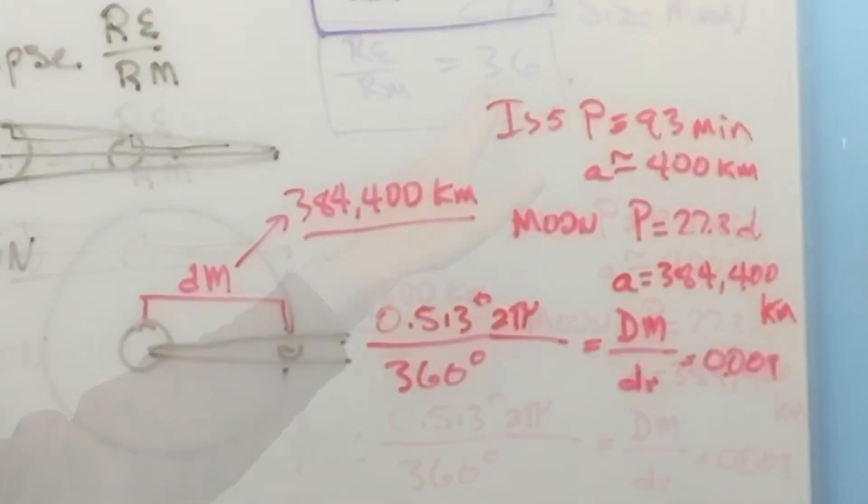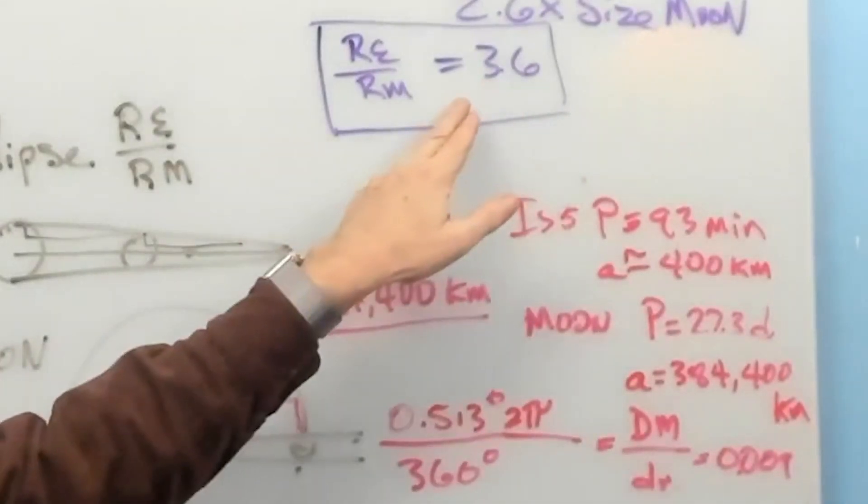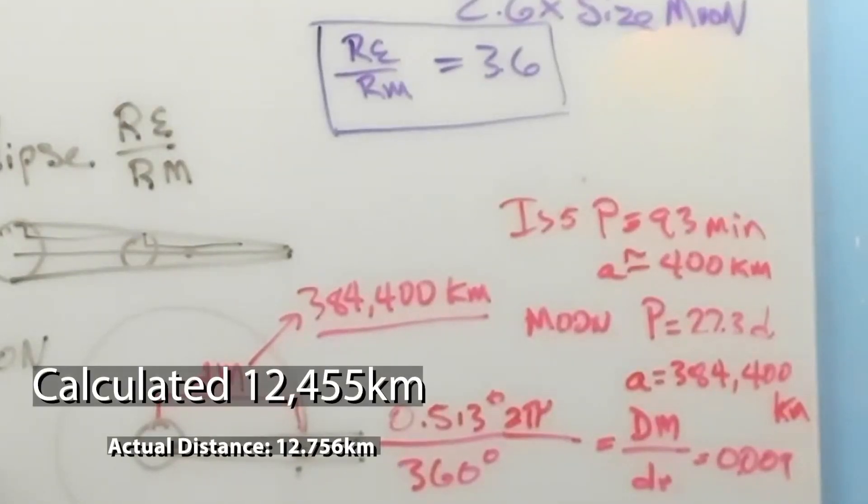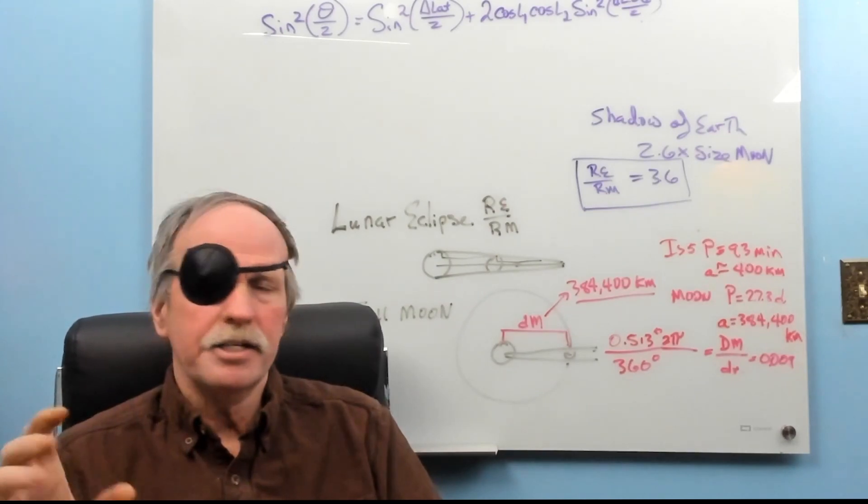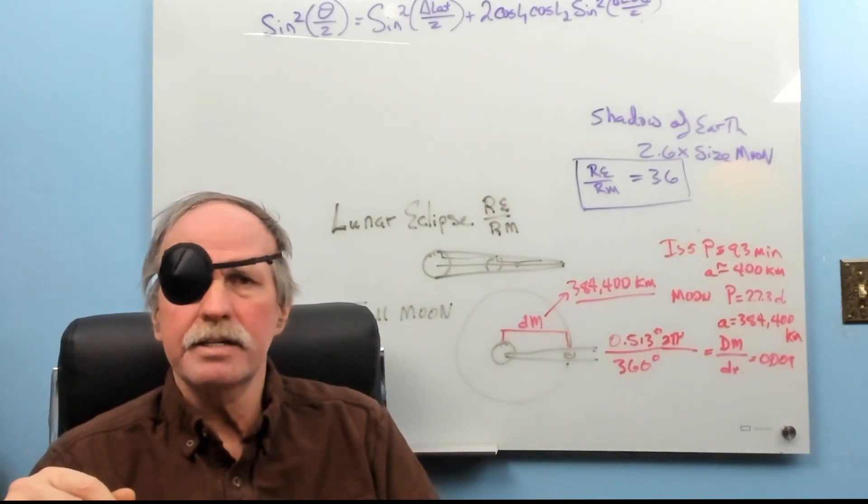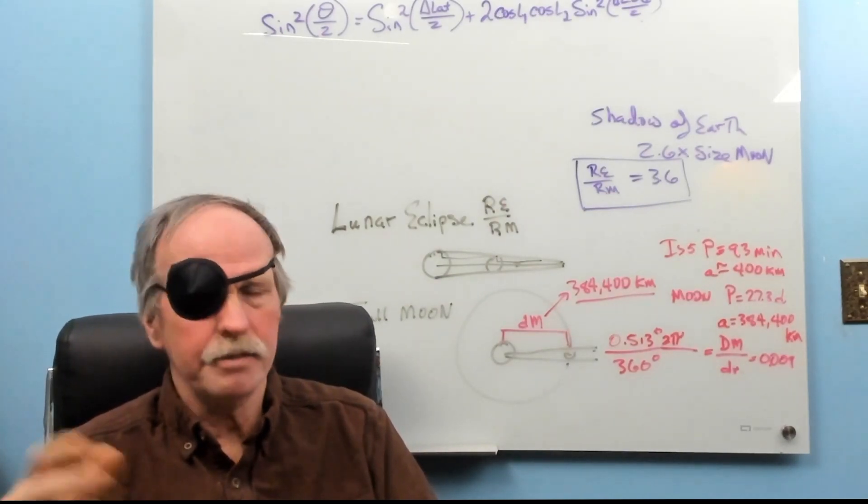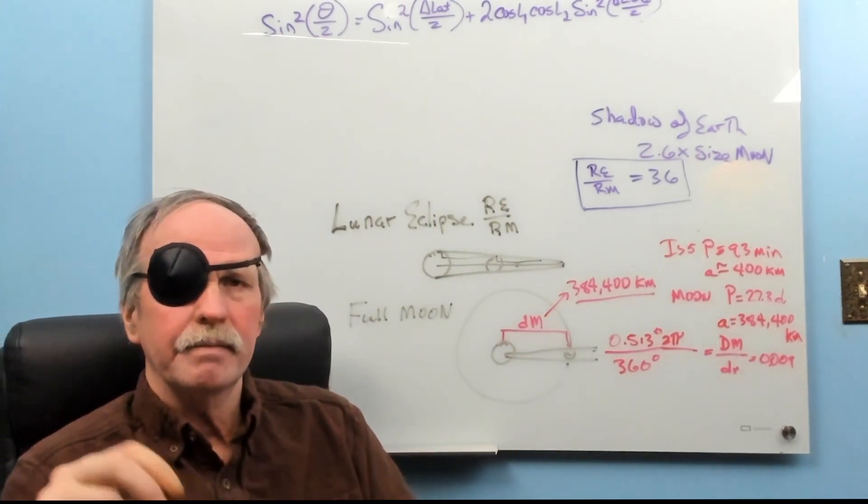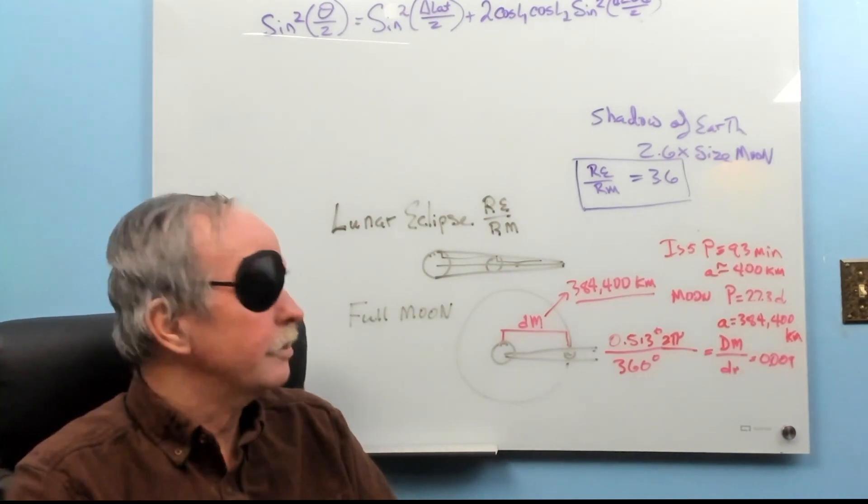The current accepted value for the diameter of the Moon based on more sophisticated measurements is 3474 kilometers. We're only 14 kilometers off. Now, recall that the diameter of the Earth is 3.6 times the diameter of the Moon. So, let's multiply this by 3.6. We come up with 12,455 kilometers. The currently accepted diameter of the Earth is 12,756 kilometers. And that's not bad considering the diameter is in excess of 12,500 kilometers. Being 300 off, really pretty darn close. And remember, the mathematics was developed 2,300 years ago.